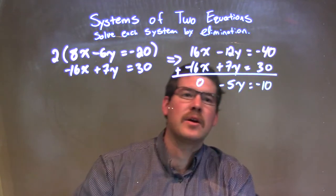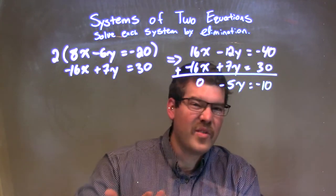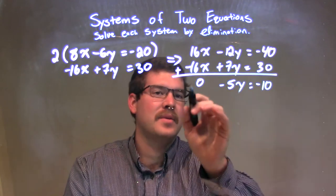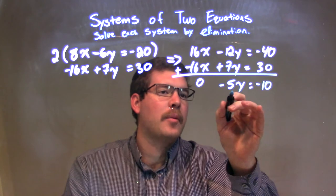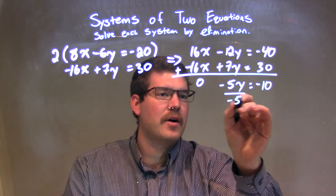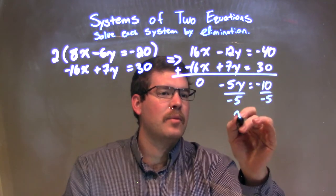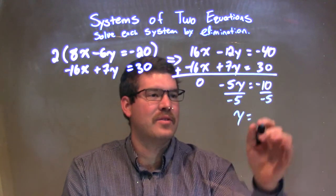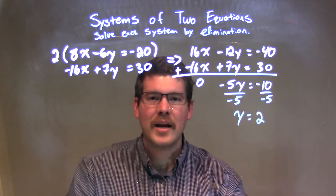So, at this point, I have an equation with just one variable. So, we need to solve for that variable. I'm going to divide both sides by negative 5. This gives me y by itself. Negative 10 divided by negative 5 is a positive 2. So, we have y to be a positive 2.